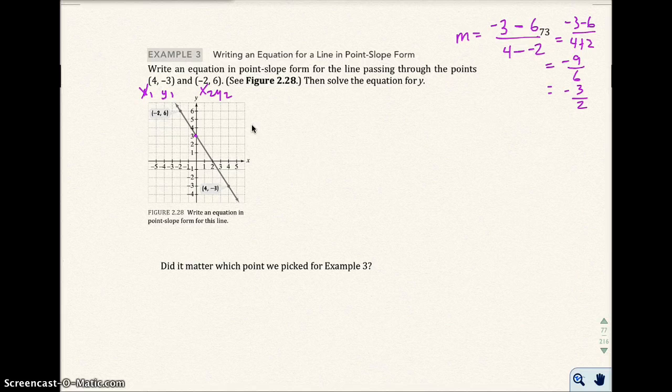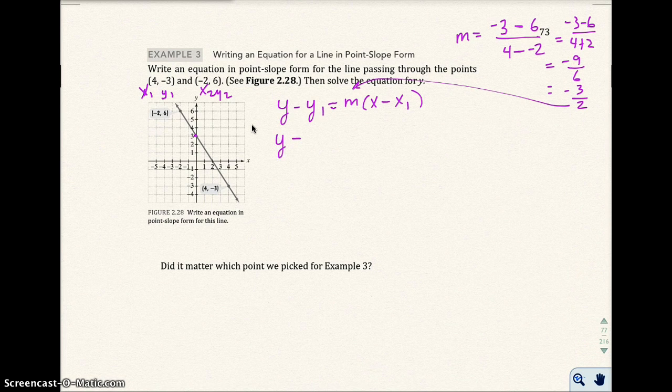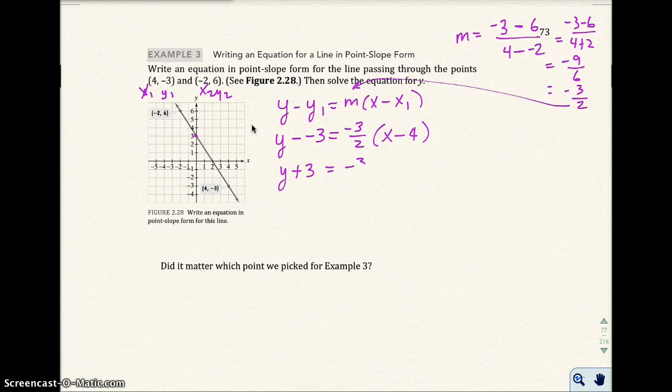So now I have enough information, I can do the point-slope formula. So here is the formula. And I go ahead and put this in for m, and I pick x1 and y1. So here I have y minus a negative 3 equals -3/2 times (x - 4).